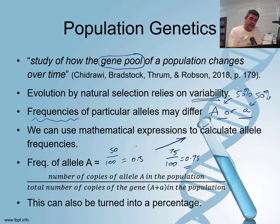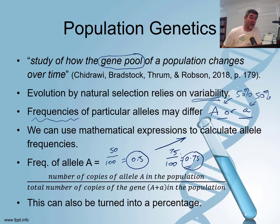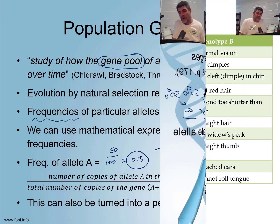So our numbers will always sit between 0 and 1. Hopefully your mathematics is sufficient for you to turn these decimals into percentages if that is more helpful to you — so 0.5 would be 50%, 0.75 is 75%, and so on.